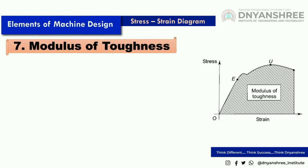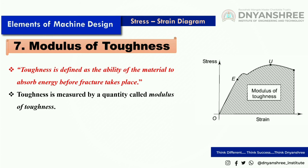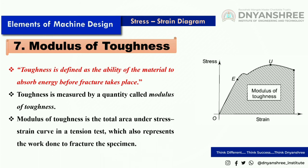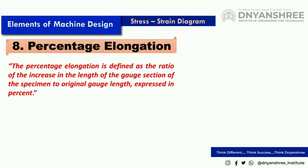The seventh point is modulus of toughness. Toughness is defined as the ability of a material to absorb energy before fracture takes place. While resilience covers energy absorption up to point E, toughness covers energy absorption up to fracture. Modulus of toughness is the total area under the stress-strain curve in the tension test, which also represents the work done to fracture the specimen.